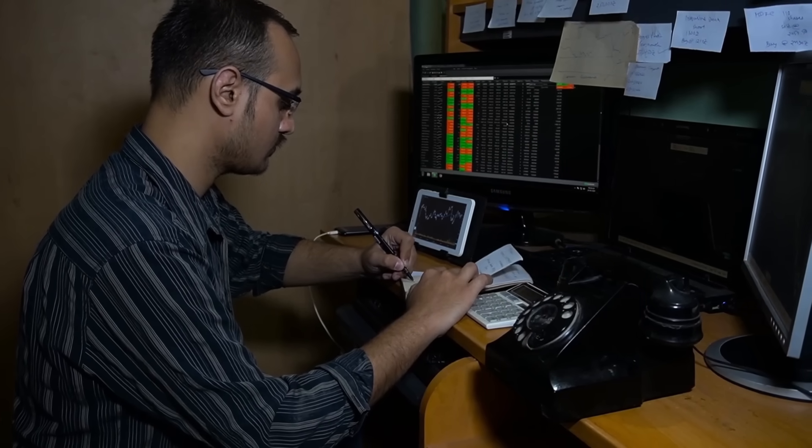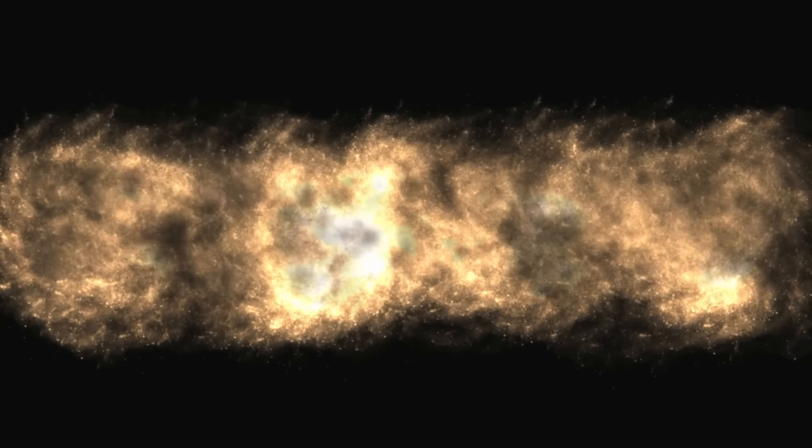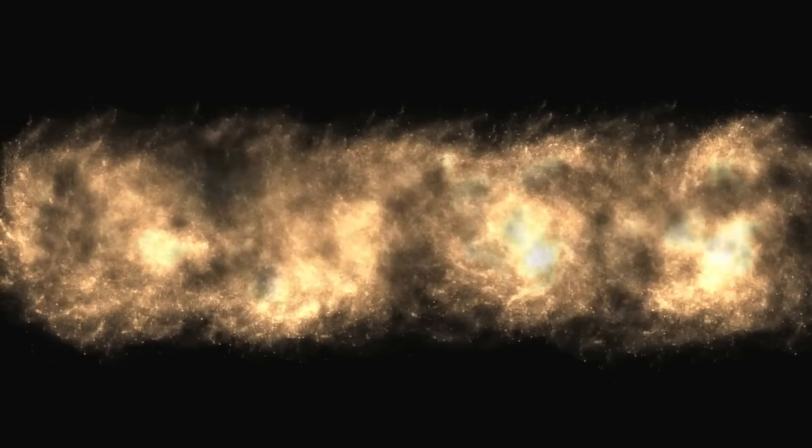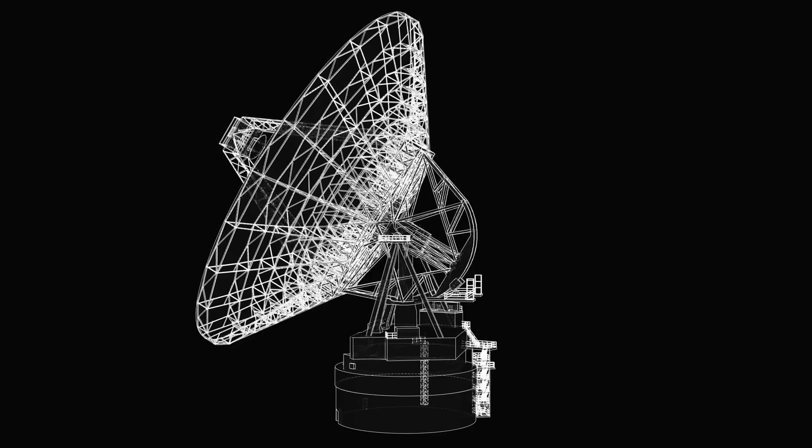3 Atlas is moving faster than anything humanity has ever tracked inbound from interstellar space. Nearly 87 kilometers per second relative to the Sun as of this week. In practical terms, it's covering the distance between Earth and the Moon in less than 80 minutes. Every hour it travels, gravitational tugs from the Sun, Jupiter and Mars adjust its path by micrometers per second. Tiny changes that become enormous across tens of millions of kilometers.